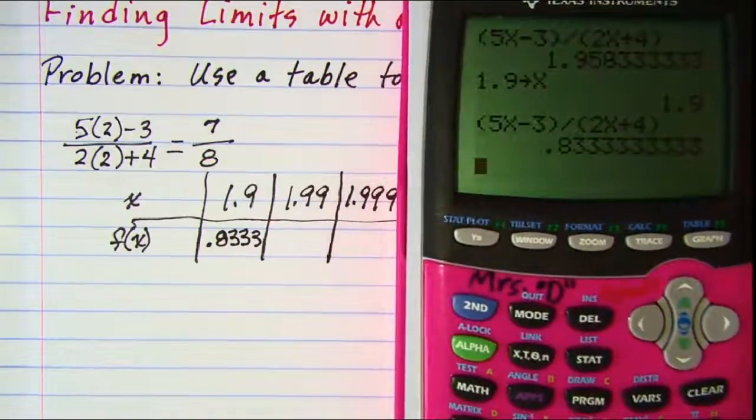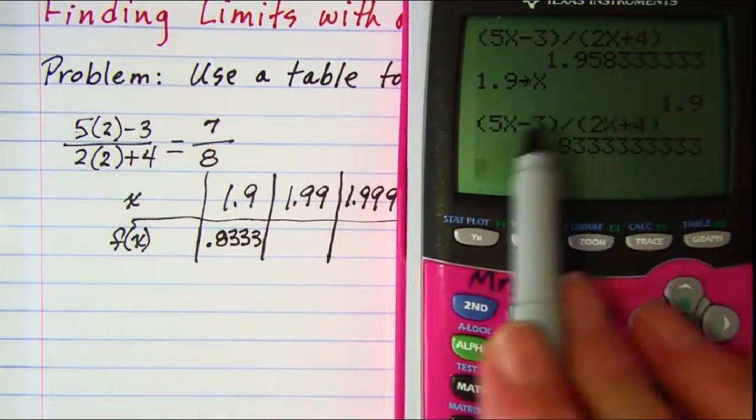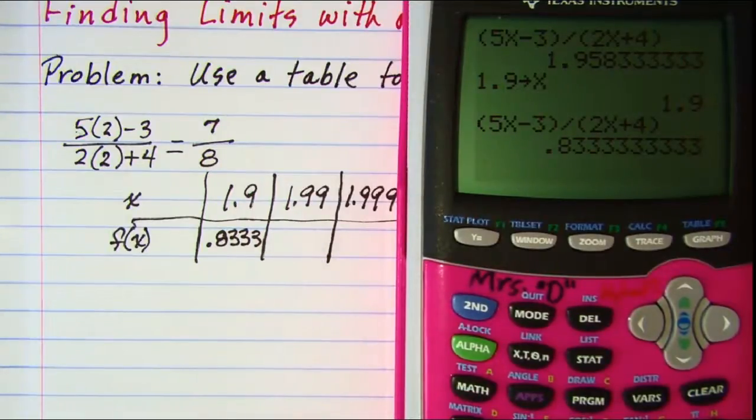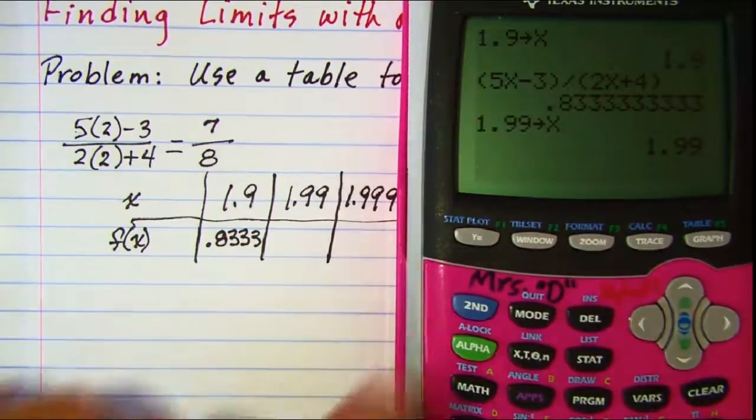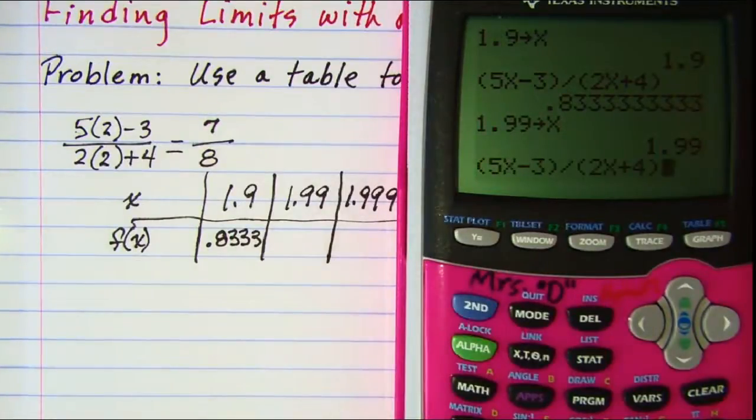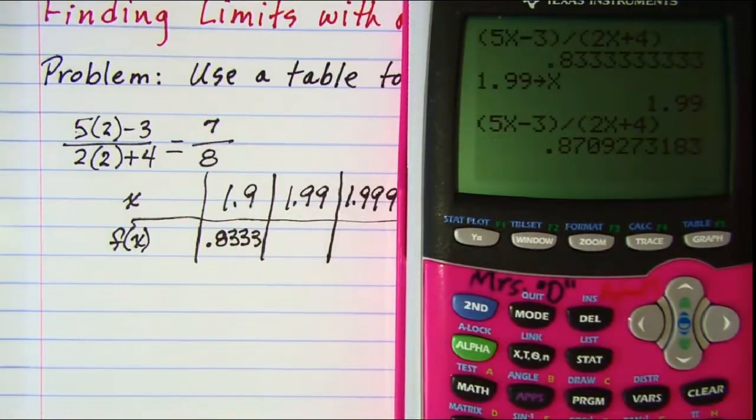Now I still have this expression stored in there but this time I'm going to put 1.99. So 1.99 store x, press enter and then 2nd enter, 2nd enter and press enter to get the value and I see that it's 0.8709.